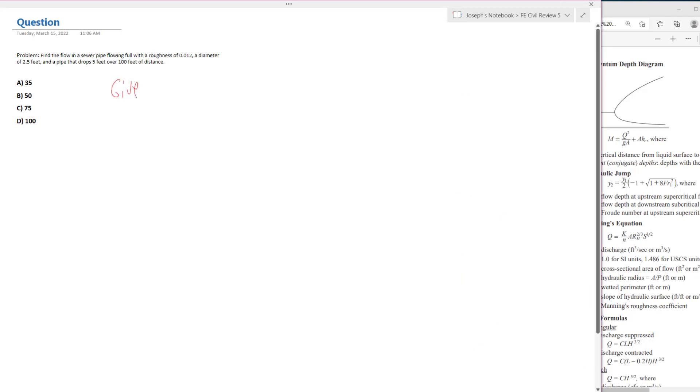So what we're given, well, we're given the roughness, 0.012, a 2.5 foot diameter, and a pipe with a drop of 5 feet over 100 feet. And what that means is we're just given a slope of 0.05, because 5 over 100 is 0.05.